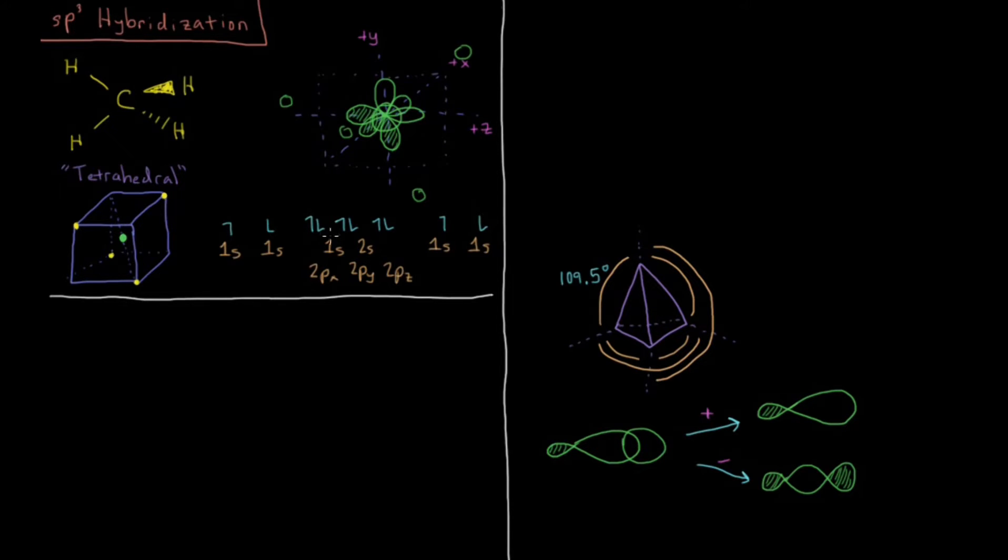So for our methane, we're going to have 6 electrons from the carbon, and that is going to give us 1s, 2s, and 2p orbitals. And we have 4 hydrogens, each of them gives us 1 electron and 1s orbital each. So that's for a total of 10 electrons in the molecule.